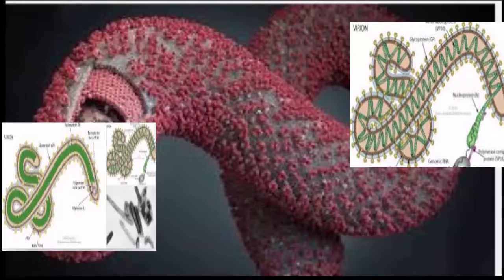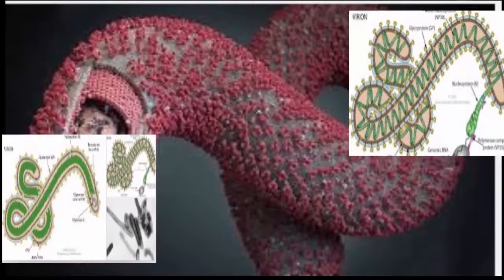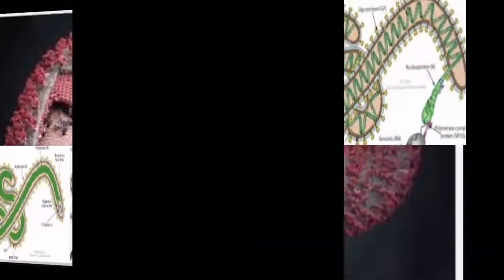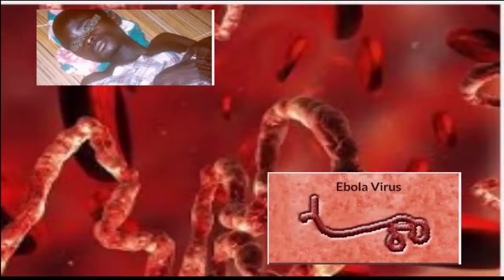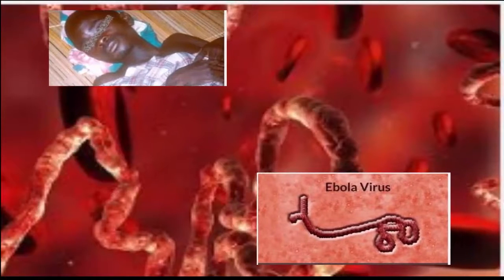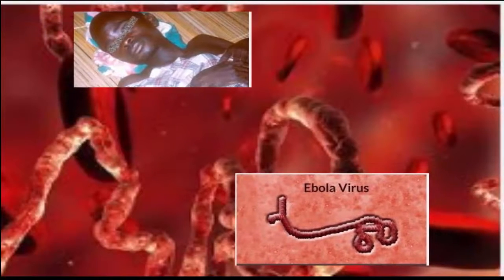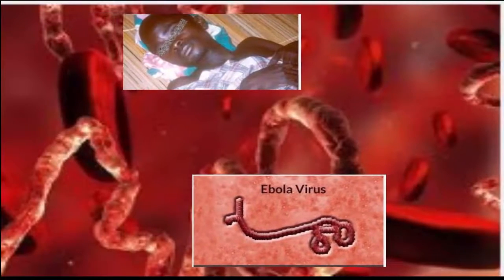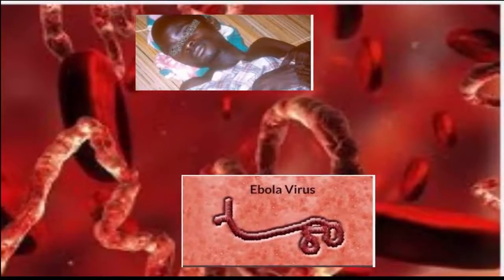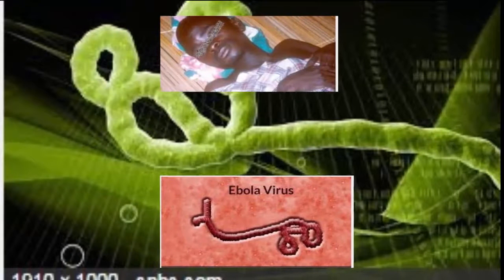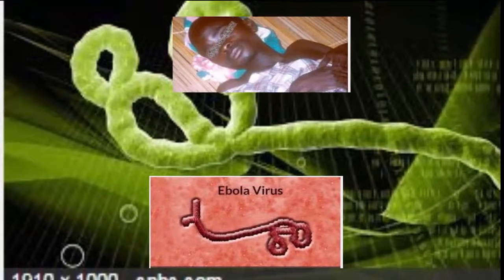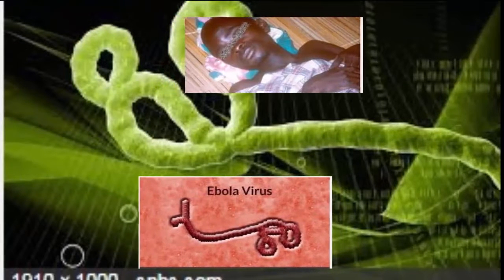Number two: there are five strains of the Ebola virus, each named after countries and regions in Africa — Zaire, Sudan, Tai Forest, Bundibugyo, and Reston.